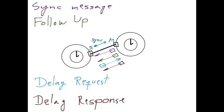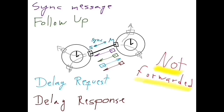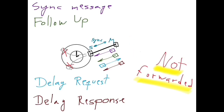An exchange of four messages is therefore used to synchronize a pair of ports. In a moment, we will look at how these messages carry timing information that allow the clock corresponding to the slave port to be synchronized with the clock corresponding to the master port. But before that, I would like to clarify two things. First, although boundary clocks usually forward messages, these four types of messages in particular are never forwarded by a boundary clock. Second, although in this particular example we have two boundary clocks, the same clock synchronization procedure is also used when one of them is an ordinary clock, or when they are both ordinary clocks.